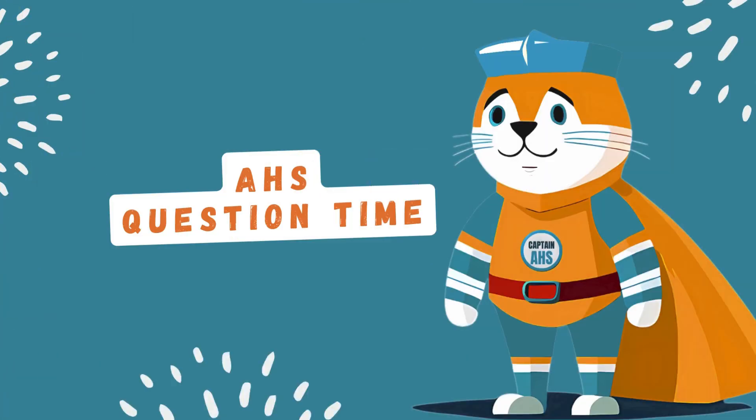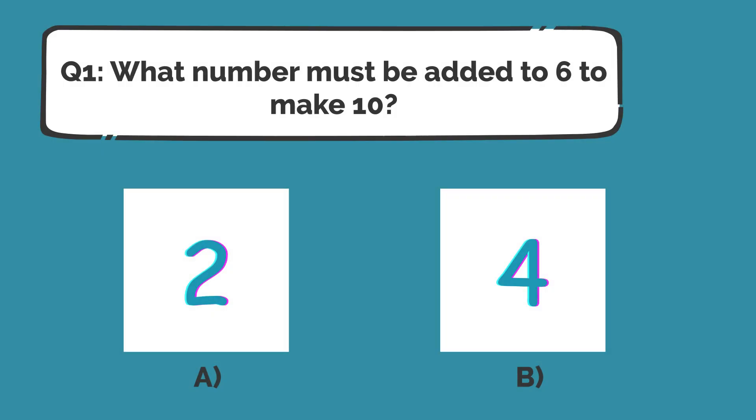Now, it's time for the quiz! Here's your first question. What number must be added to 6 to make 10? Is it Option A or Option B? Think about it! That's right! The correct answer is Option B, 4!